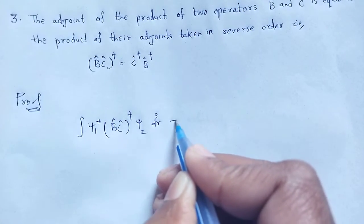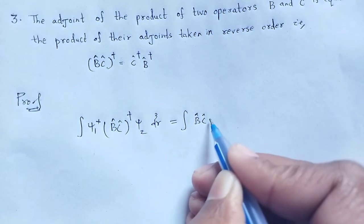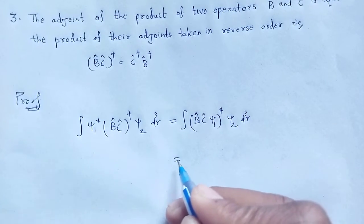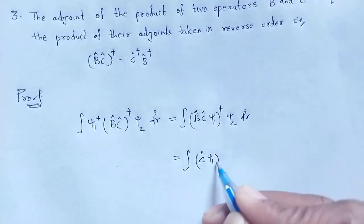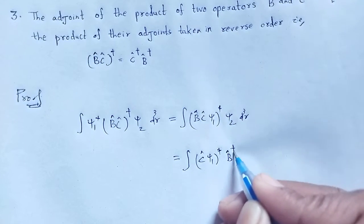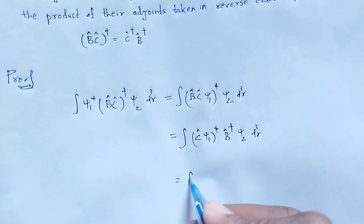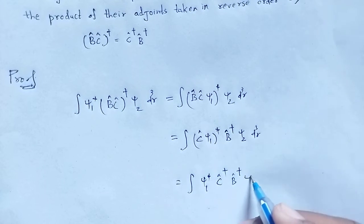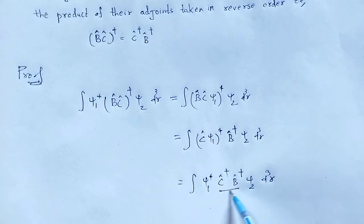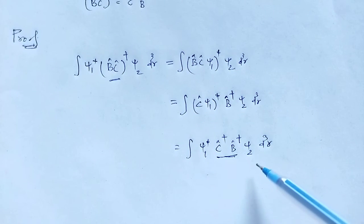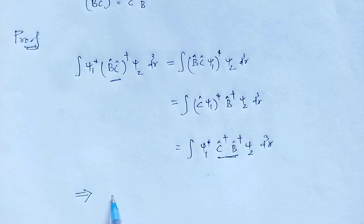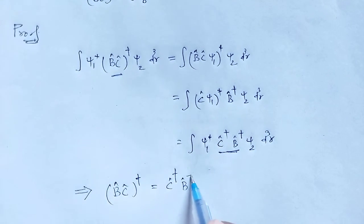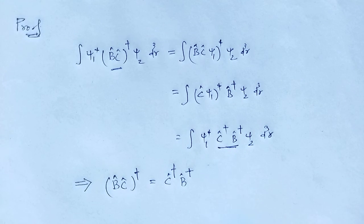Proof: integration over psi-1-star B-cap C-cap-dagger psi-2 dτ equals integration over B-cap C-cap psi-1-star psi-2 dτ, which equals integration C-cap psi-1-star psi-2 dτ. Applying the adjoint step-by-step using B-cap-dagger and C-cap-dagger, and since psi-1 and psi-2 are arbitrarily chosen, therefore B-cap C-cap-dagger is the same as C-cap-dagger B-cap-dagger. That is proved.